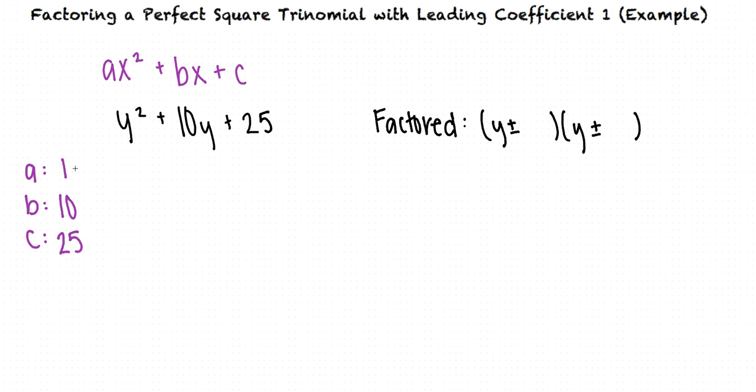a times c is 1 times 25, which is 25. So now we want to find two numbers that multiply to 25 and add to 10. We can make a list of pairs of factors that multiply to 25. From this list, we need to find which pair of numbers also adds to 10.